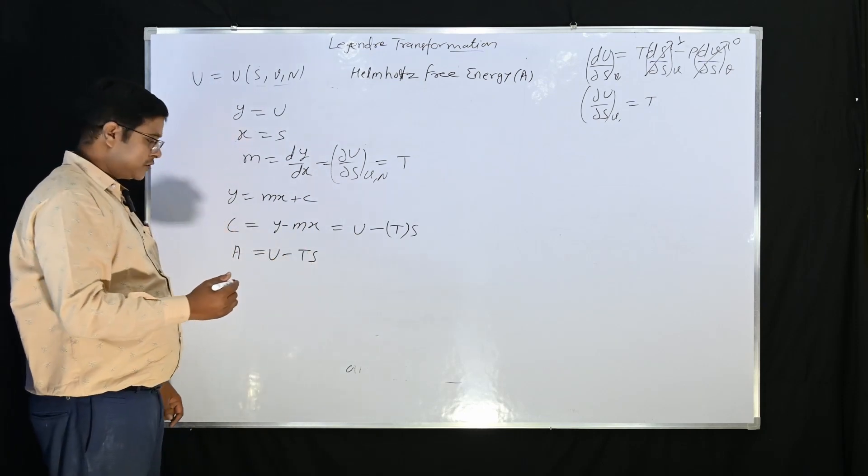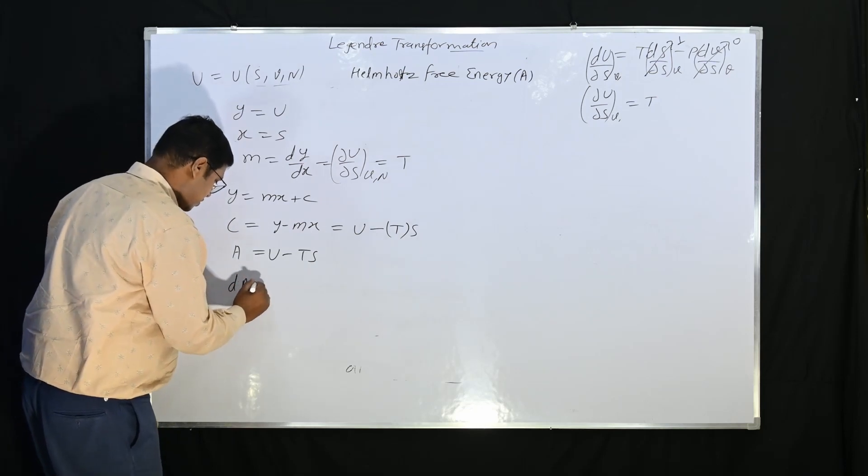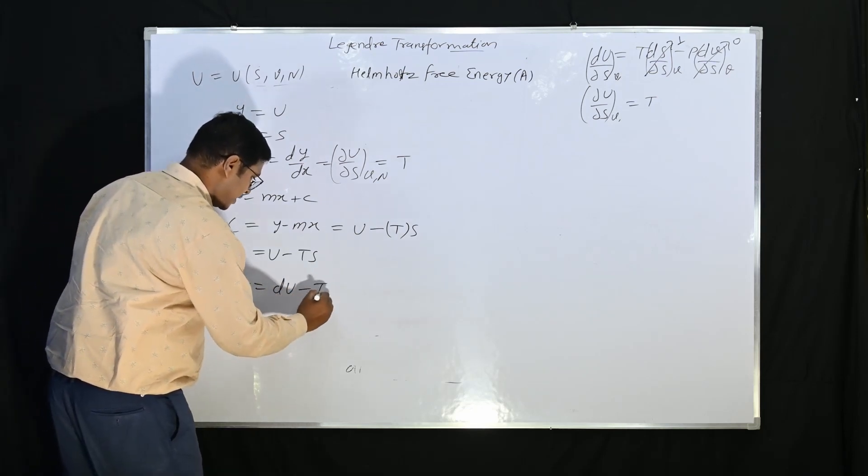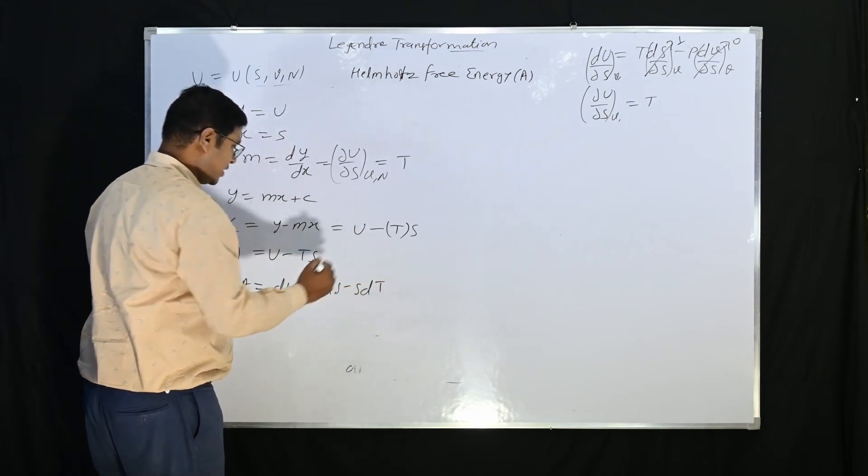Let us differentiate both sides. So dA is equal to dU minus TdS minus SdT.